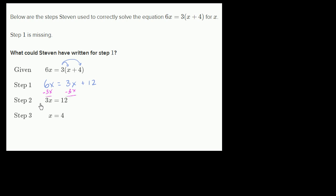So this looks like a completely reasonable first step for Steven. The first step is he distributes the 3 to get this expression. Then he subtracts 3x from both sides to get 3x is equal to 12. And then he divides both sides by 3 to get x is equal to 4.